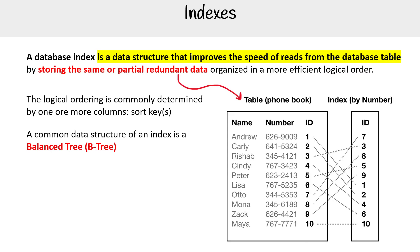Here we have a visual. Imagine you have a table for a phone book and you want to quickly find people based on the phone number — maybe you're trying to find entries starting with 344 or something. The idea is you make an index and say you want to index by the phone number, and what it's going to do is change the order.